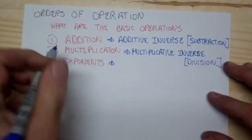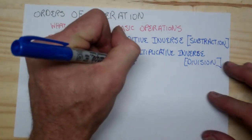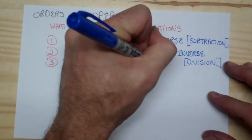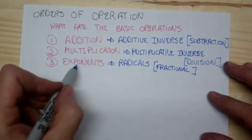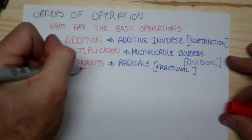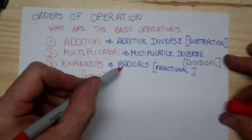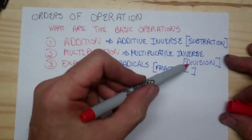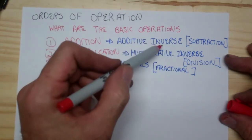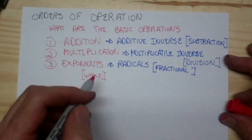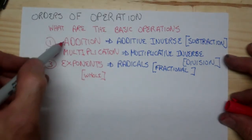Exponents is a little bit more complicated. We normally think of exponents as whole numbers, and then you have radicals, which are fractional exponents. So radicals are just a different way of writing exponents, division is just a different way of writing multiplying by the inverse, and subtraction is just a different way of writing addition by the inverse. So radicals, division, and subtraction are all notations for addition, multiplication, and exponents.